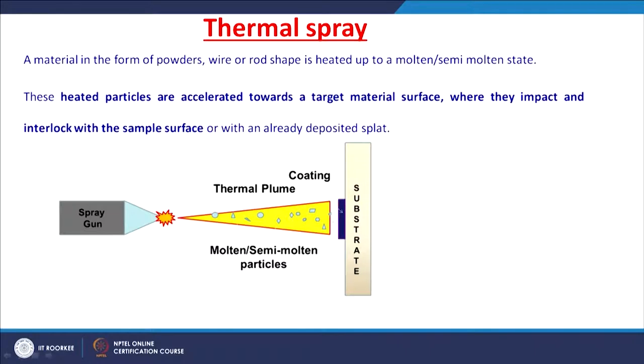In thermal spray, a material is fed in the form of powders, wires, or rods and this material is heated to a molten or semi-molten state. The heated particles are accelerated towards a target material surface where they impact and interlock with the sample surface or with already deposited splats, and then the coating is formed.